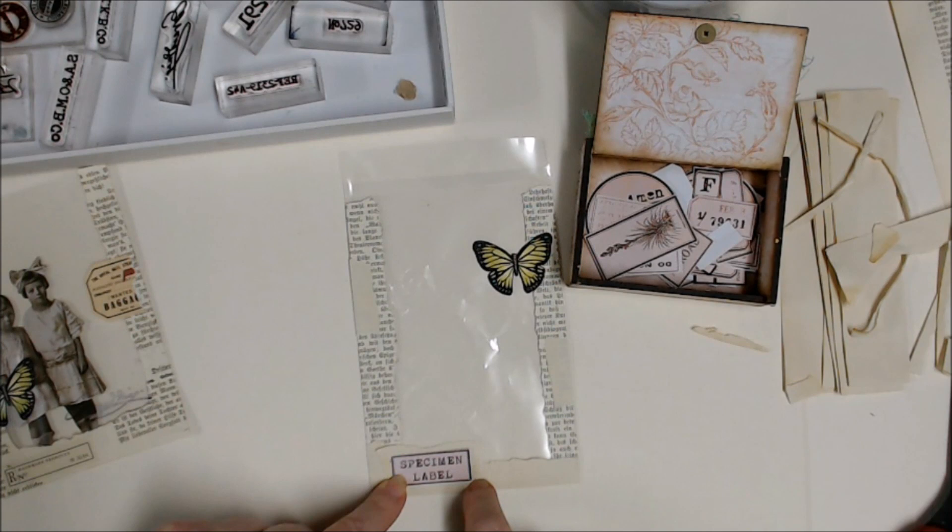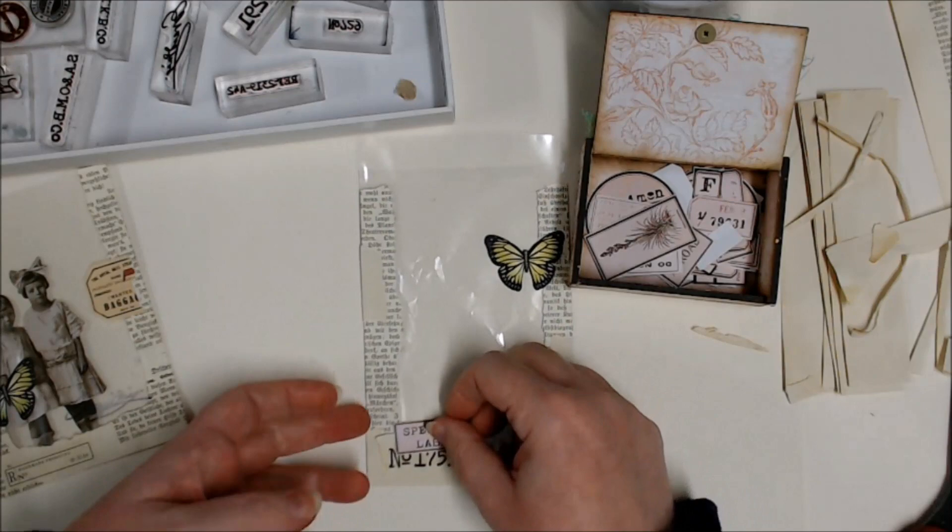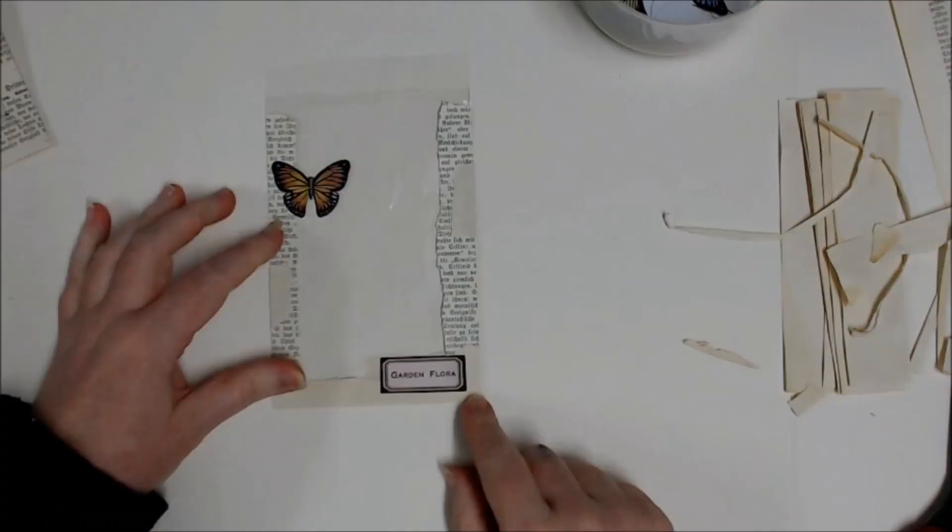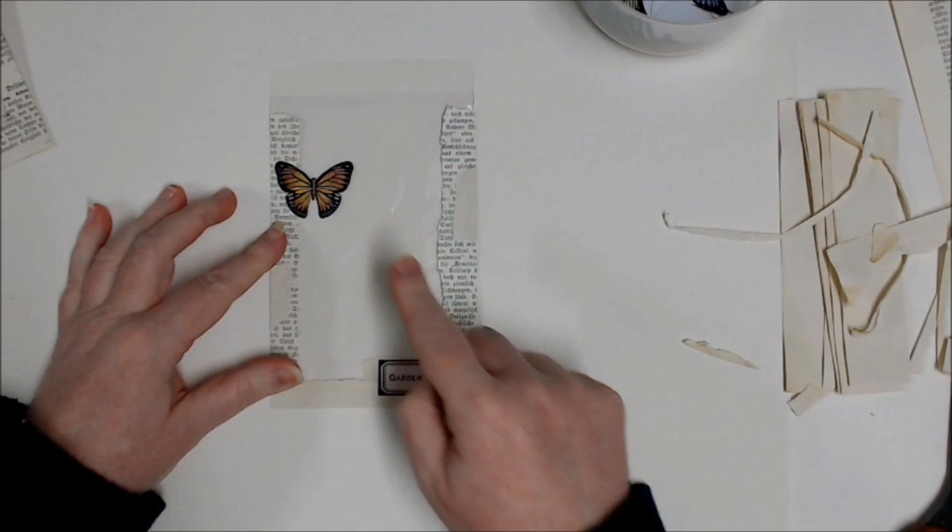And just making sure I'm not protruding around the piece of tea-dyed paper that I've put on. Otherwise you'd have the same problem on the other side where you're exposing the white label again.